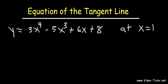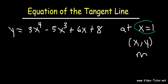There are two things that you need: the value of x, the value of y, and you need the slope. We already have the value of x — it's 1. To find the value of y, we need to plug in 1 into our original equation. To find the slope, we need to plug in 1 for x into the derivative equation.